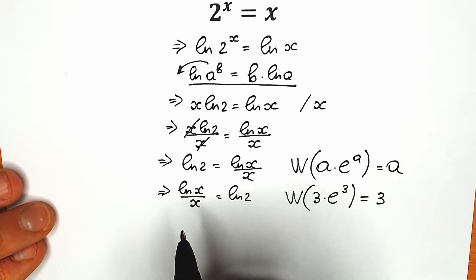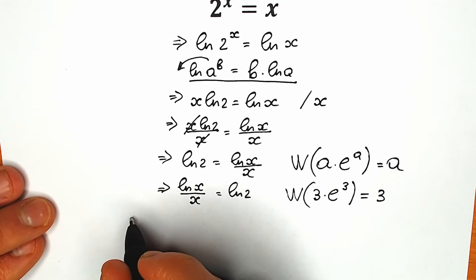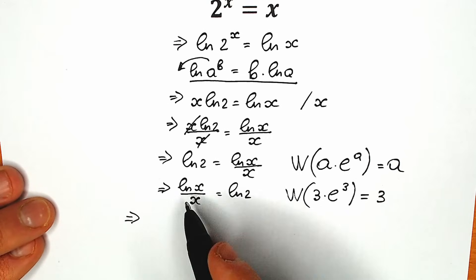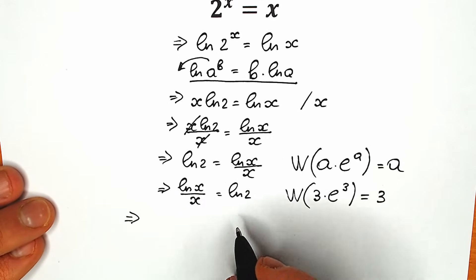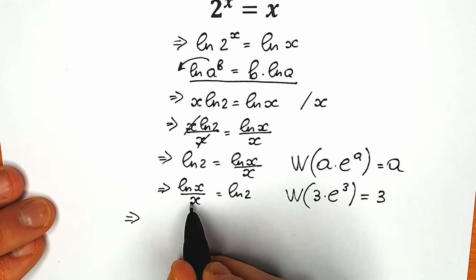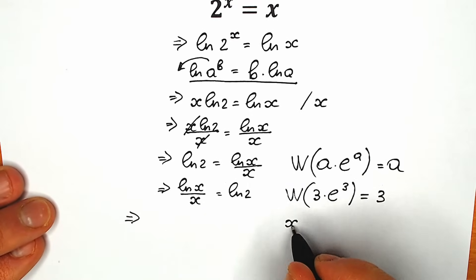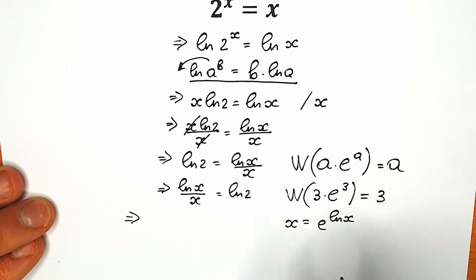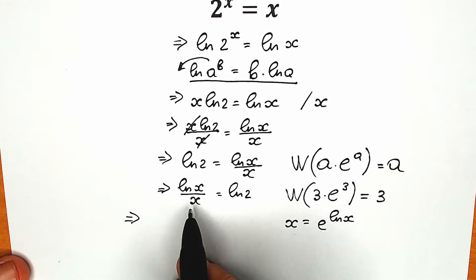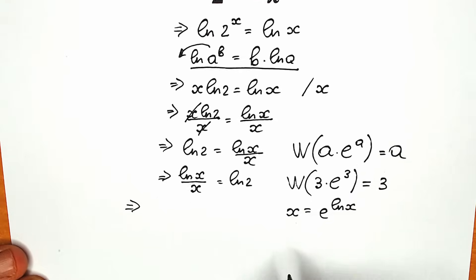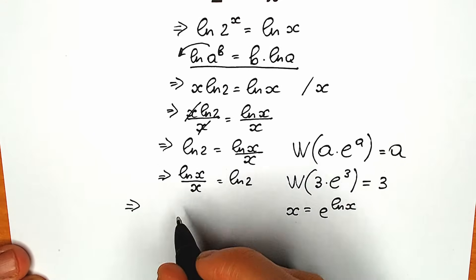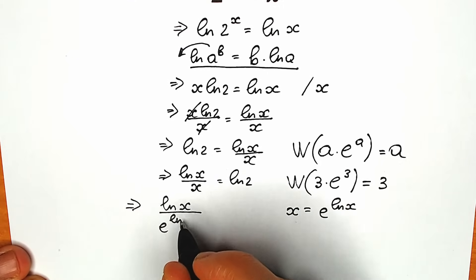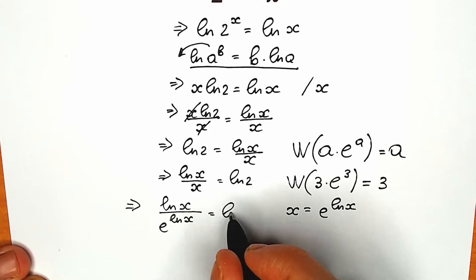Now let's create that structure in our expression. We need to introduce e. The x in the denominator can be rewritten as e to the power natural log x. So instead of x in the denominator, we write e to the power natural log x, giving us: natural log x divided by e to the power natural log x equal to natural log 2.